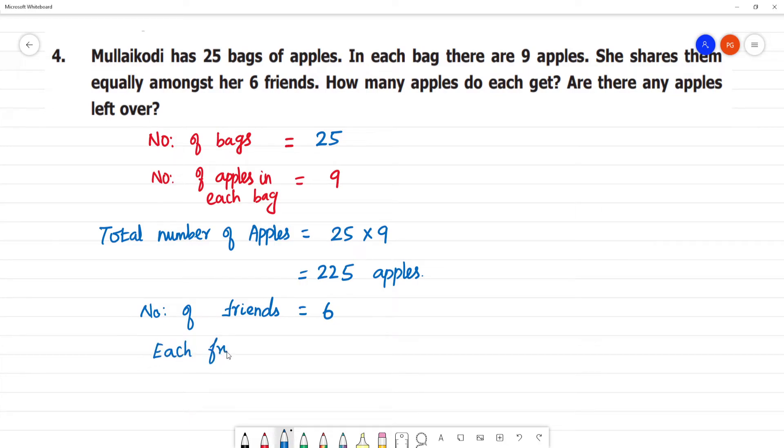Each friend will get 225 divided by 6. 6 times 3 is 18. 22 minus 18 is 4, bring down 5. 6 times 7 is 42, remainder 3.